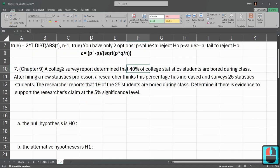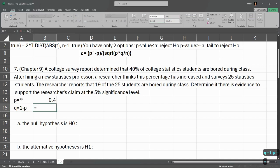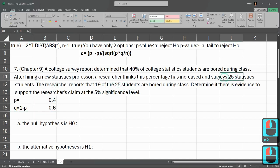A college survey report determined that 40% of college students are bored during class. So our regular P is 0.4. Our Q is 1 minus P, so 1 minus that value. N, so here we have 25 students being surveyed in the new survey.